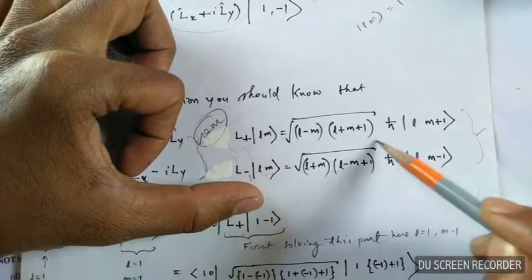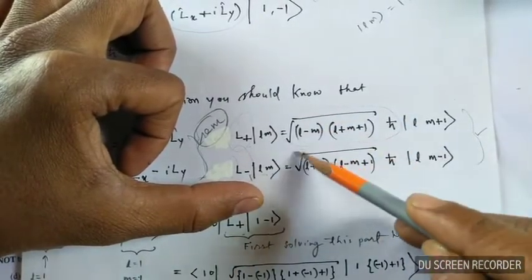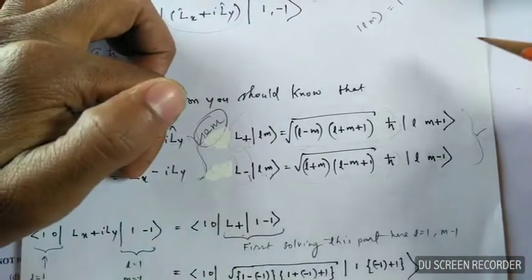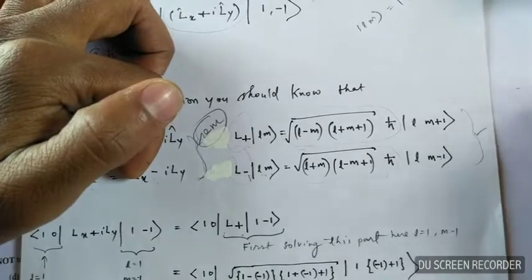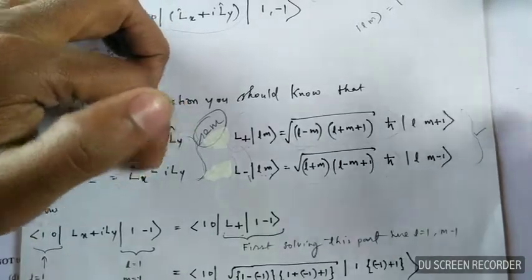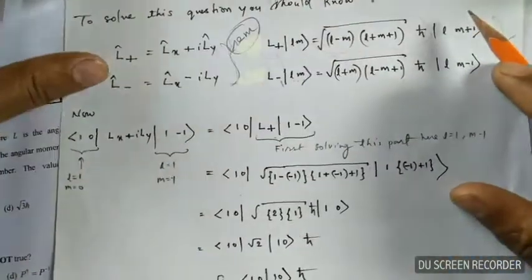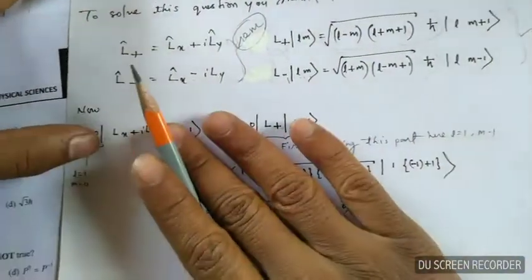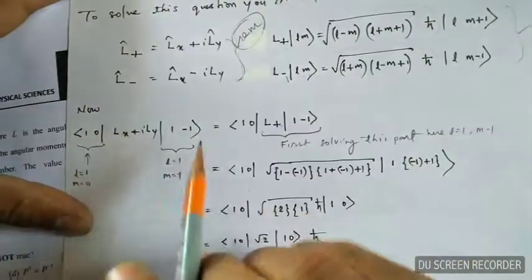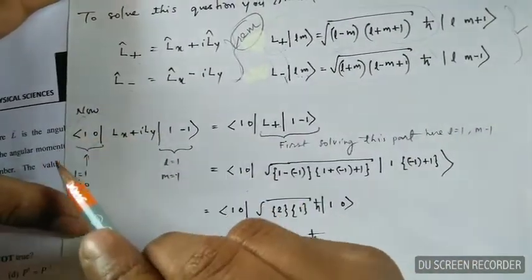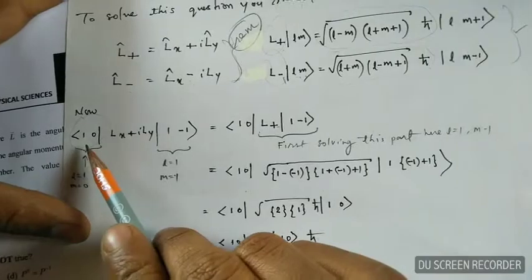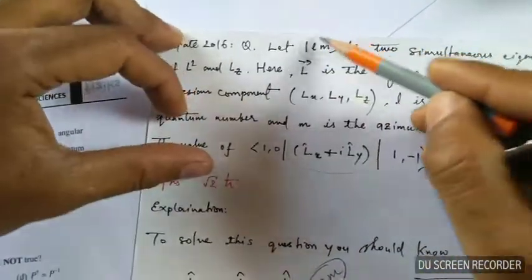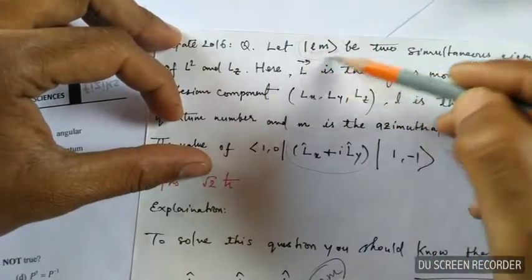This is the eigenvalue in the first case and this is the eigenvalue in the second case. Remember and memorize these two equations. Now let's come to the actual solution. In this expectation, this is the bra vector.